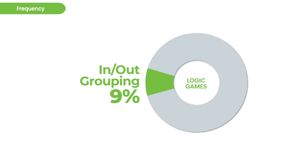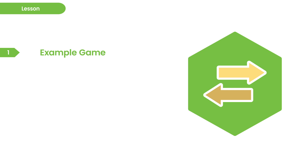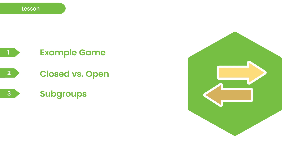In today's lesson, we're going to look at the following. We're going to start with an example game so you get a chance to see what this game type looks like. Then we're going to talk about some of the characteristics associated with in-out grouping games, like closed versus open — whether you know how many players go to each team or not — whether there are different kinds of players or subgroups, and what are the opportunities for creating frames to allow you to move faster. So let's start with this example game.